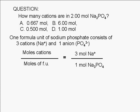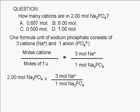We can rearrange this equation to solve for the moles of cations. Essentially, what we end up doing is multiply the given number of sodium phosphate units, 2.00 moles, by the ratio of three moles of sodium ions to one mole of sodium phosphate. The ratio serves as a conversion factor.